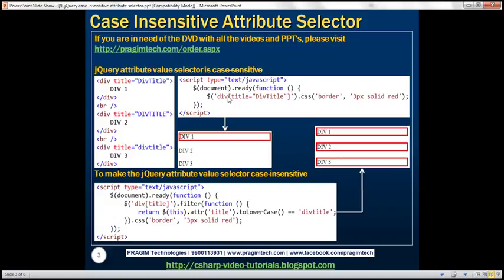Look at the jQuery code here. This is basically telling: find all the div elements which have got the title attribute, and the value of the title attribute must be equal to 'div title'. For all such div elements, we want to include a three pixel solid red border. When we execute this code, we get a red border only around the first div element, but not around the second and third div. That's because by default the comparison is going to be case sensitive. So let's see how to make this comparison case insensitive.